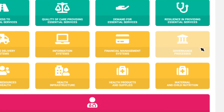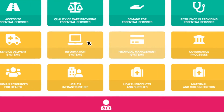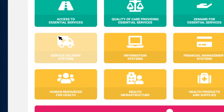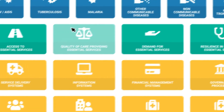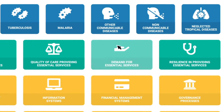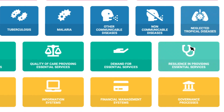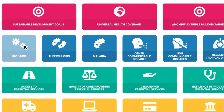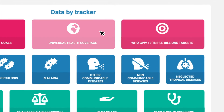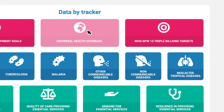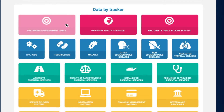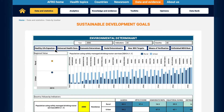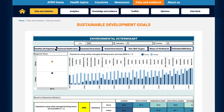These trackers center on multiple key themes such as the building blocks of the health system, dimensions of health system performance, disease program areas, in addition to universal health coverage, sustainable development goal 3, as well as other SDG targets related to health and well-being.